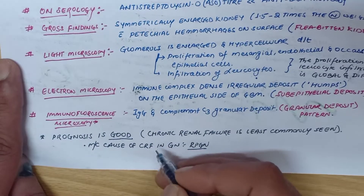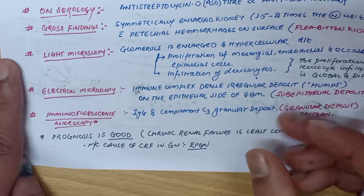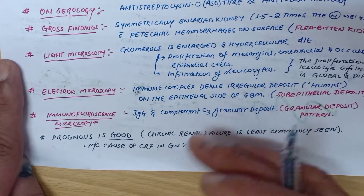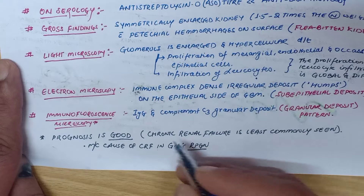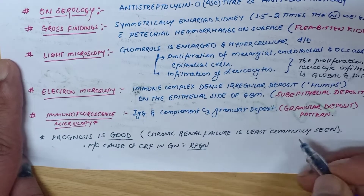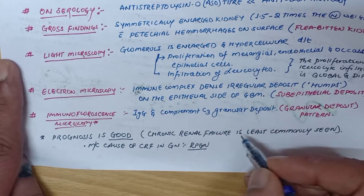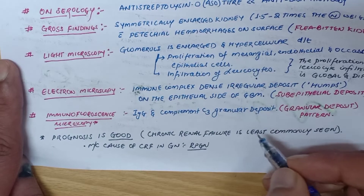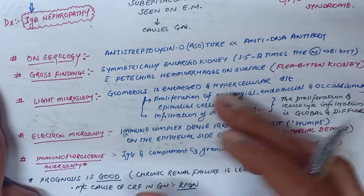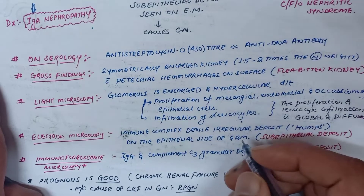Overall the prognosis is good and chronic renal failure is least commonly seen in APGN or PSGN, whereas chronic renal failure is most commonly seen in RPGN. This is all about post-streptococcal glomerulonephritis.